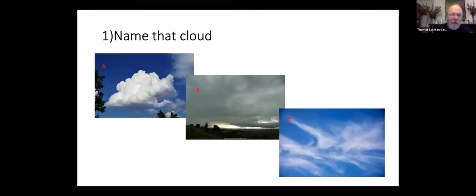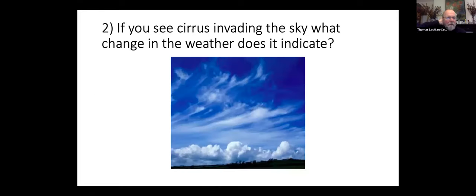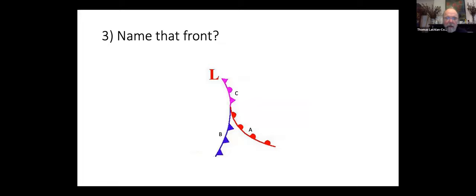Quiz answers: A is cumulus, B is stratus, C is cirrus — though meteorologists tend to disagree on cloud types. If you see cirrus invading the sky, it indicates a warm front coming — a frontal system — meaning you'll likely get rain and a change of wind direction. Name that front: A is a warm front, B is a cold front, C is an occluded front. An occluded front is where the cold front has caught up with the warm front, pushing the warm air aloft. The point of maximum activity and heaviest rain on a front is the triple point — where cold front, warm front and occluded front meet.